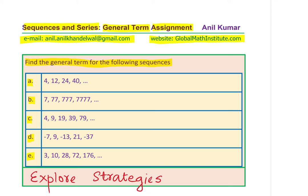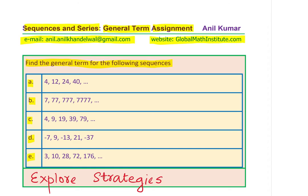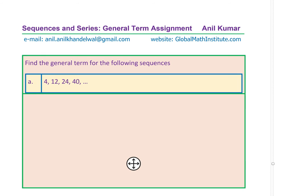So let's begin with the very first one, which is 4, 12, 24, 40. It seems simple, but let us see how we can solve such a sequence and find the general term for it. So we are given a sequence. The numbers are 4, 12, 24, 40, and so on.